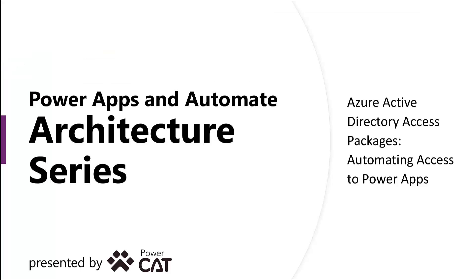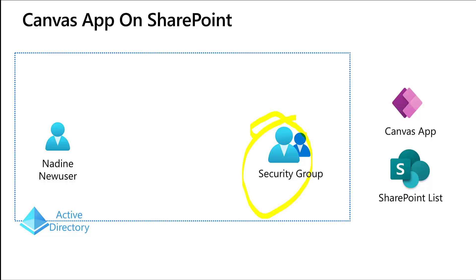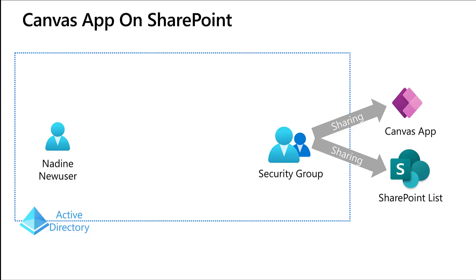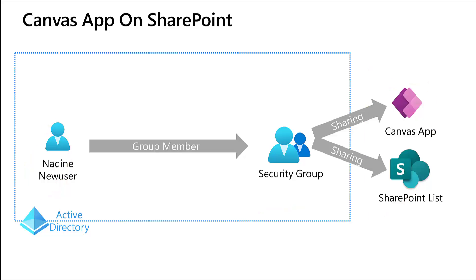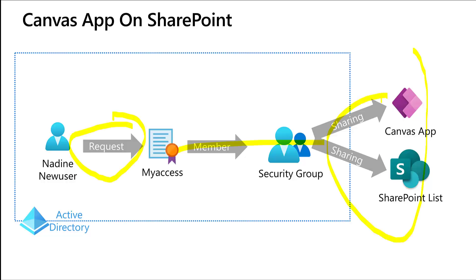We're going to do two apps. This first one is going to be pretty simple — a Canvas app based upon a SharePoint list. We need to give the user access to both the Canvas app and the underlying data. We're going to do this through an Active Directory security group. We'll create a group, share the Canvas app with that group, and share the SharePoint list with that group. Then we just need to make the person a member of this group and they'll have access to the app and the data. We're going to use access packages via MyAccess.Microsoft.com. Nadine can come in and request access via My Access, and once it's approved, that will add her as a member to that group, completing the process.